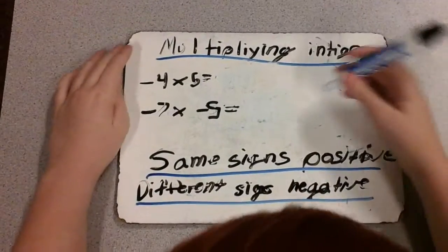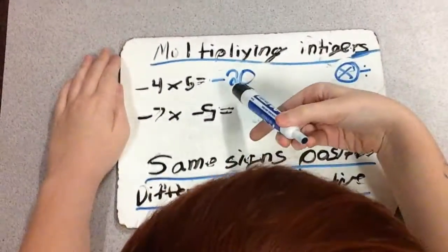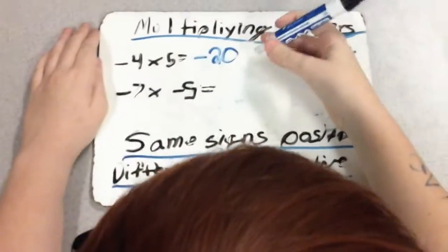Negative 4 times 5 is negative 20. Negative 7 times the apparently upside down negative 5 is positive 35.